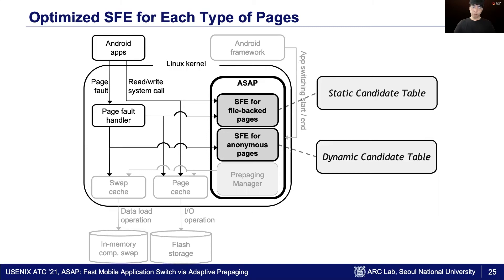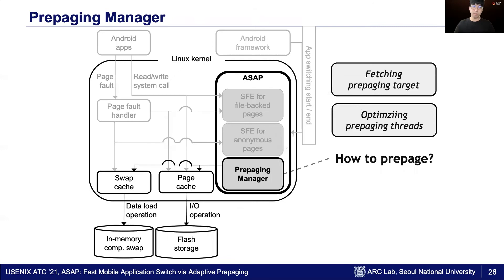Based on this observation, we take a different approach in designing SFE for each type of page. To exploit the static access pattern, SFE for file-backed pages uses a static candidate table, which is generated from offline profiling. In contrast, SFE for anonymous pages uses a dynamic candidate table, which is updated dynamically at runtime.